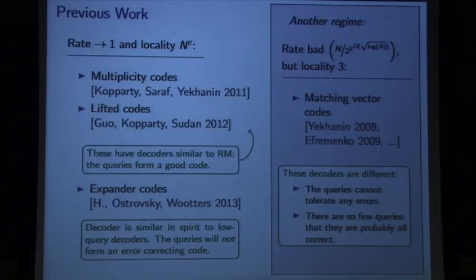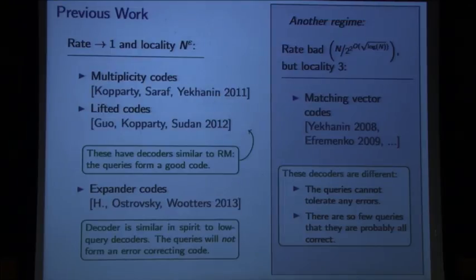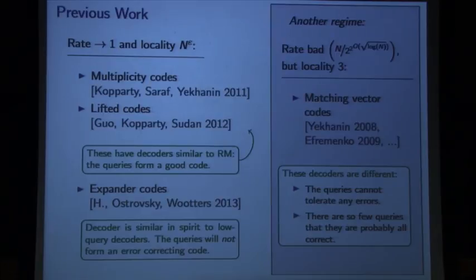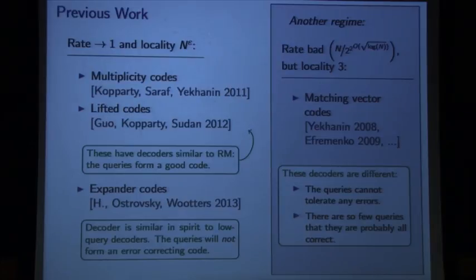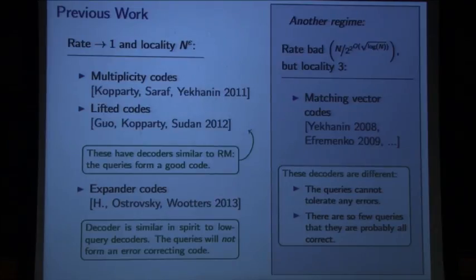These are all locally correctable codes — for Reed-Muller, you're reading symbols of the code word. What I want to talk about today is decoders for expander codes, which are in this regime on the left: rate approaching one, query complexity n^epsilon. What separates expander codes from multiplicity and lifted codes is that the queries we make won't form a natural code word — they'll have some distance property that allows correcting from some errors, but they don't form code words in a traditional sense.